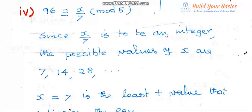Question number 1, fourth subdivision. We are given 96 is congruent to x by 7 mod 5. Now this x by 7 is to be an integer. Because this is a congruence relation, this x by 7 must be an integer.